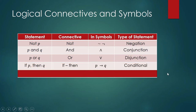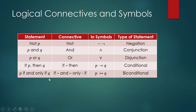'If p then q' — the connective is 'if-then' and the symbol is the arrow (→). 'If p then q,' or 'p implies q,' is called a conditional statement or implication statement. 'P if and only if q' uses the biconditional connective, written with the double arrow (↔), and compound statements formed this way are called biconditional statements.